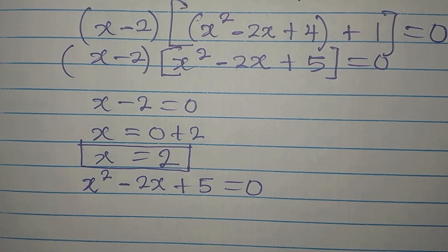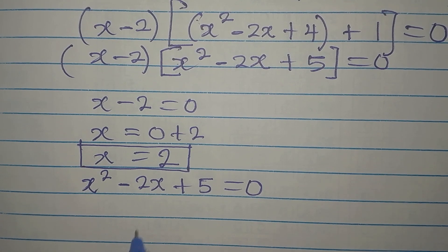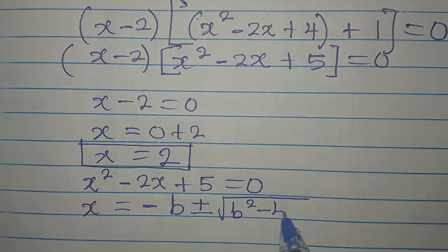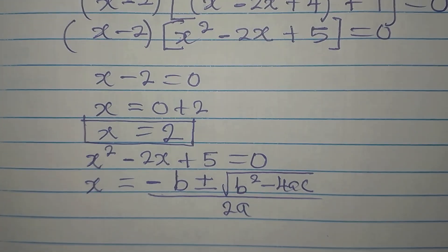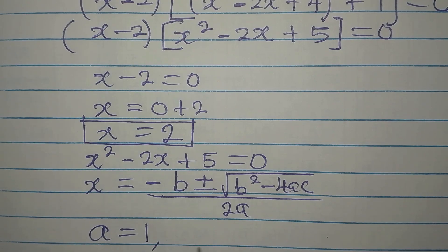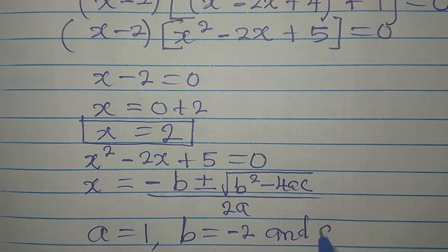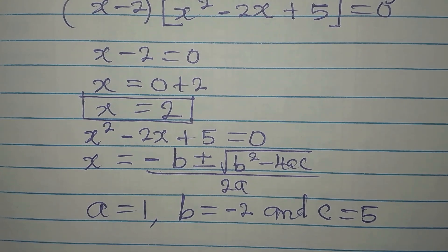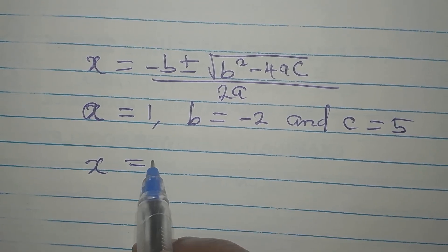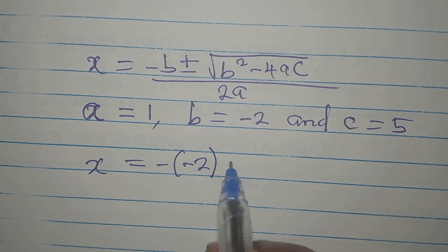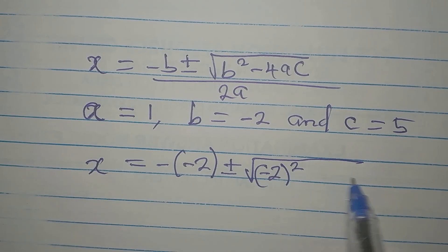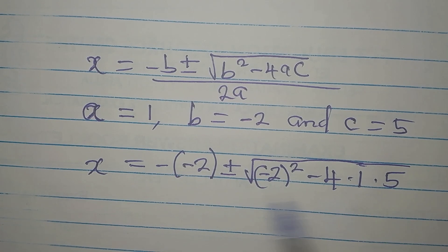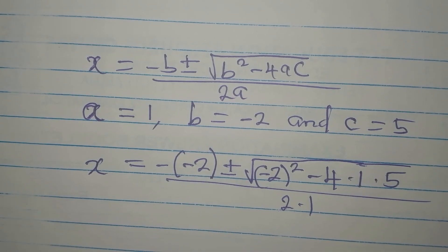Using the quadratic formula: X = (-B ± √(B² - 4AC)) / (2A). Here A = 1, B = -2, and C = 5. Substituting: X = (-(-2) ± √((-2)² - 4·1·5)) / (2·1).